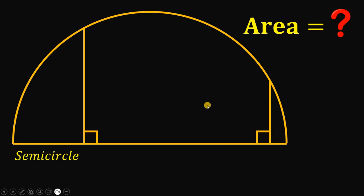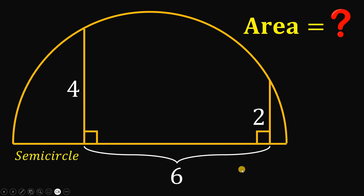The length of this segment must be equal to 2 units, and the length of this segment must be equal to 4 units. The distance between these two segments must be equal to 6 units.